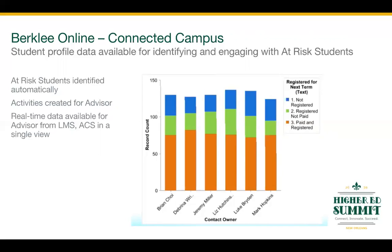Even better is when you add a second system. Taking the financial data in ACS, an advisor can now see the big picture. A student who hasn't turned in an assignment in two weeks might be identified as at-risk, but as the advisor calls the student, they can also see the ACS financial data and see that the student hasn't paid for any of the classes they've enrolled in for next semester either — chances are there's a much larger problem at hand. Berklee strives to not just present users with raw data, but to really guide them on the best way to engage with students for optimal success.